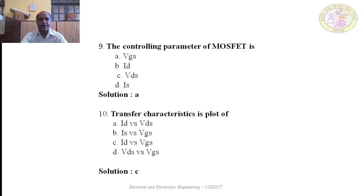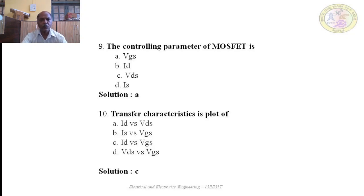Question 9: The controlling parameter of a MOSFET is: A — VGS (gate-to-source voltage); B — ID (drain current); C — VDS (drain-to-source voltage); D — IS (source current). The correct answer is A — VGS, that is gate-to-source voltage, controls the MOSFET operation. The output current of a MOSFET is controlled by the input gate-to-source voltage.